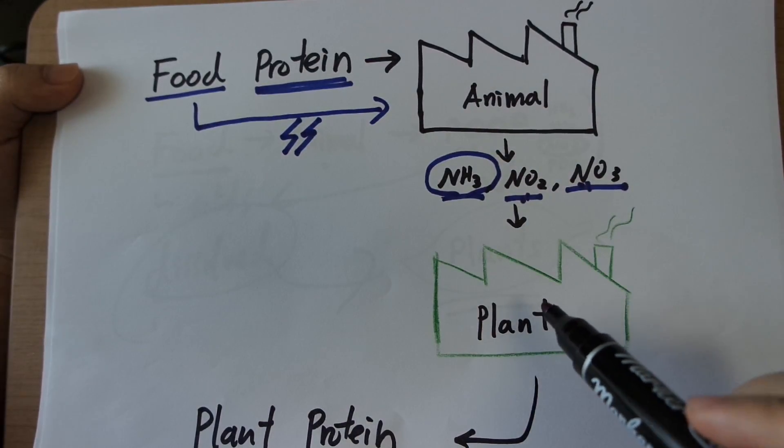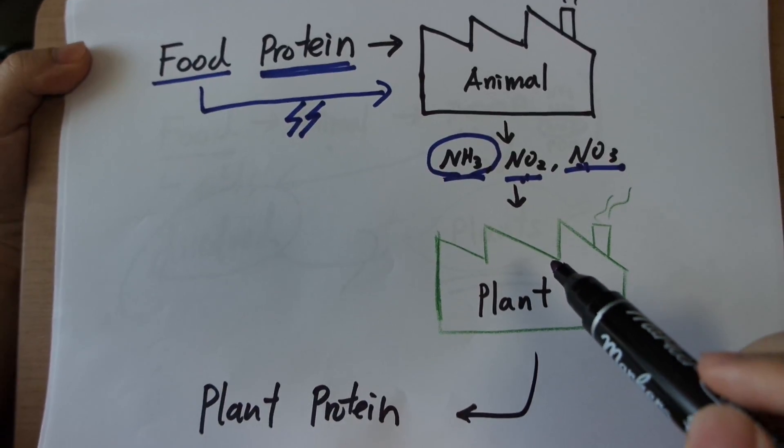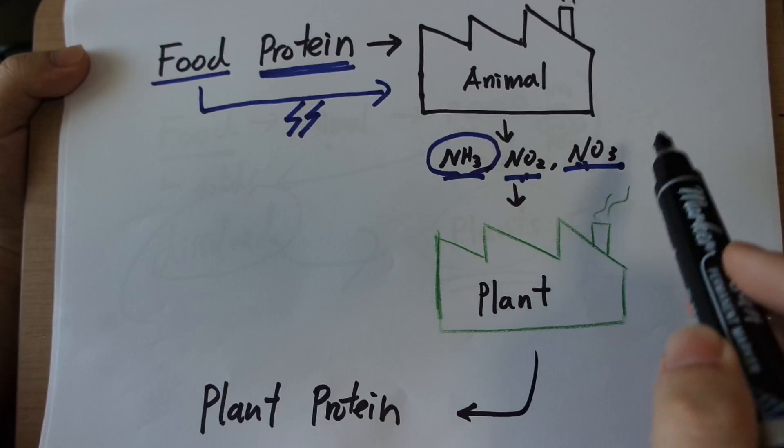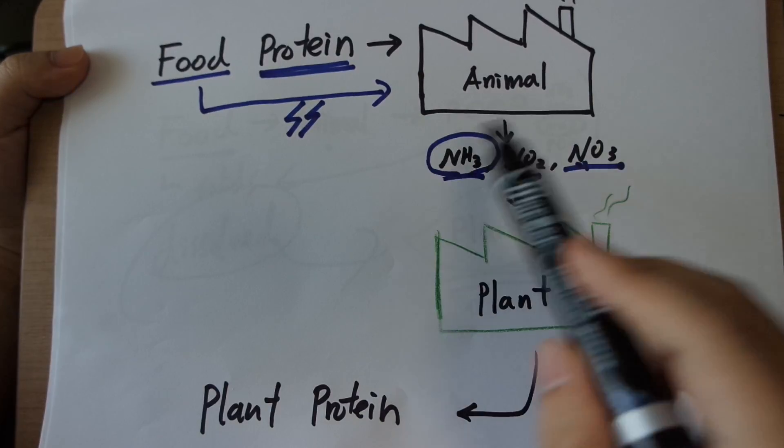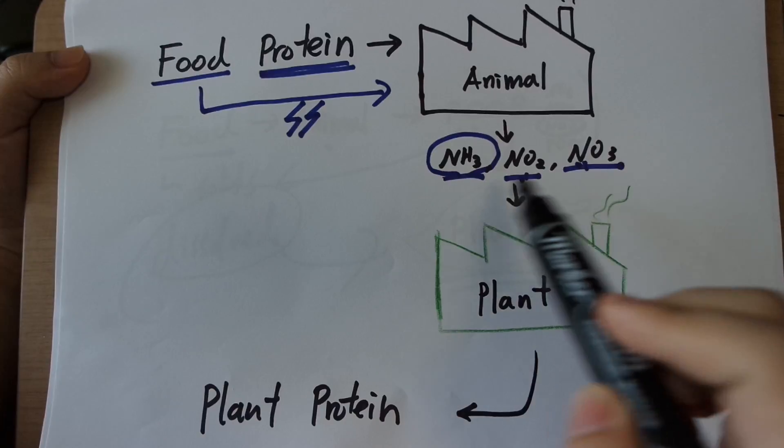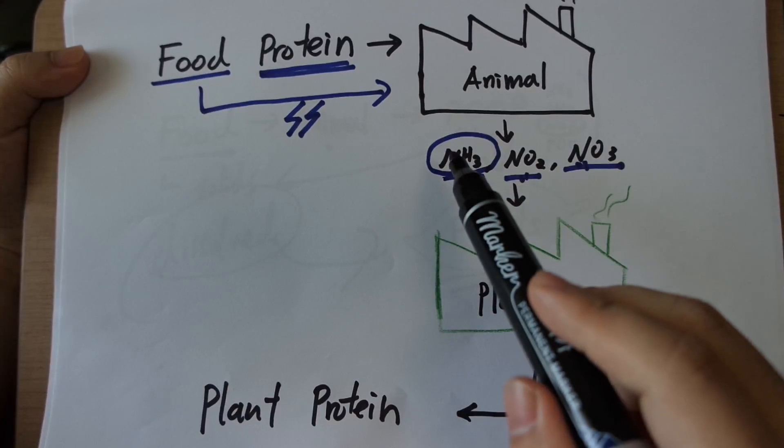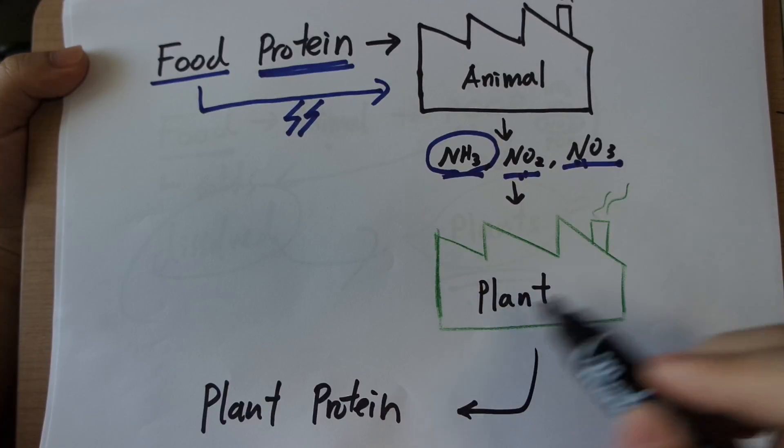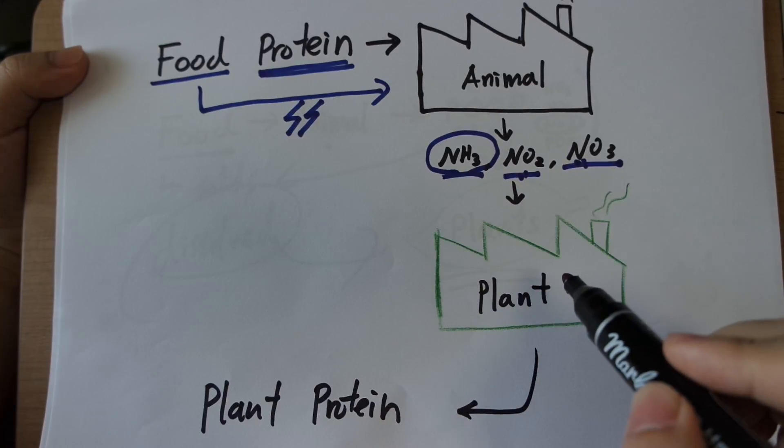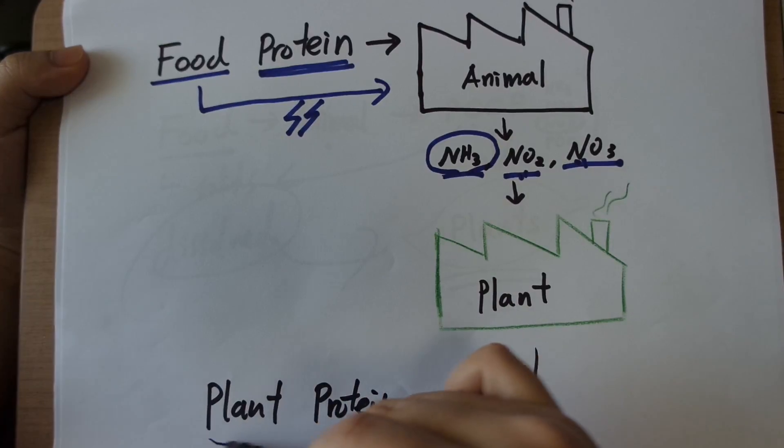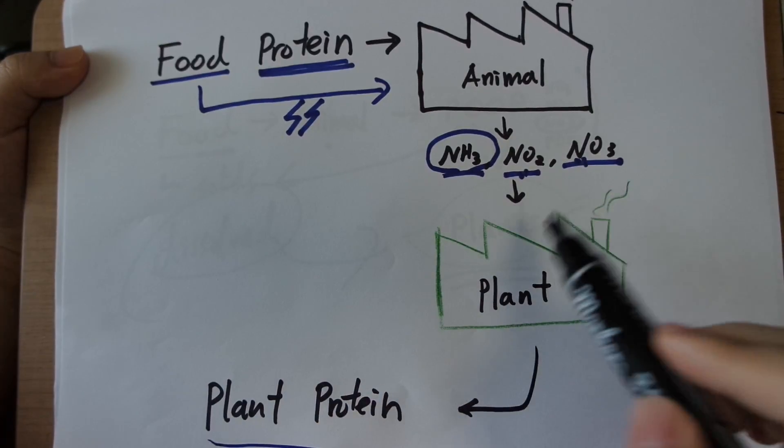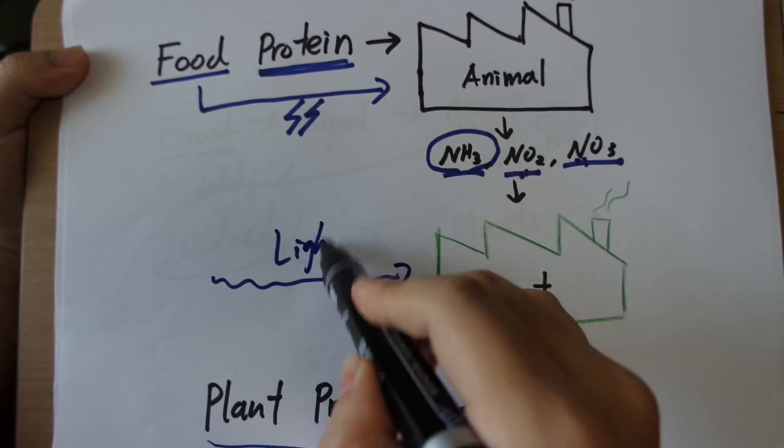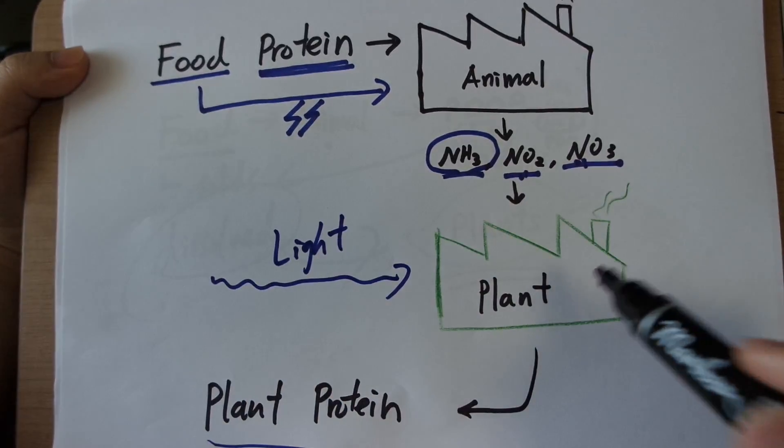And what are plants? Plants you can think of as other factories that take these raw materials. Now this is waste for the animals, but for plants, these are raw ingredients, the nutrients they take up. So they take these raw materials and process it in this factory, which is a plant. The plants are factories that convert these raw materials into plant protein. And what powers this factory? It is a factory that is powered by light. So that is what plants do.